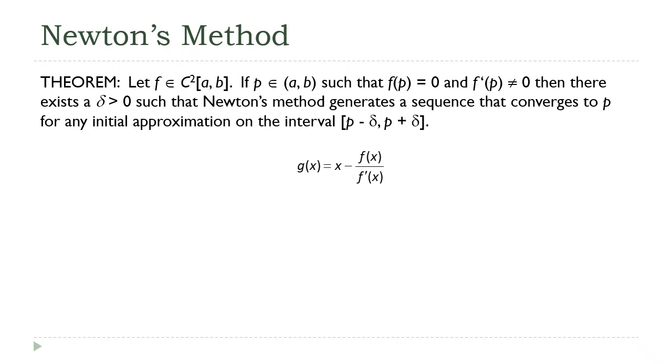So my first concern here is, can I even be sure that this Newton's method formula is defined on some interval around p? Because that f'(x) in the denominator part is concerning. If I can't guarantee that that is never equal to zero, then I can't be certain that this function exists.